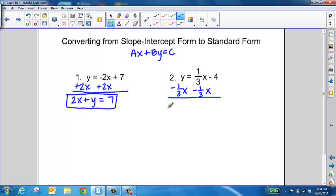What we're going to have then is negative one-third x plus y equals negative 4. Remember to carry down that negative or that subtraction.